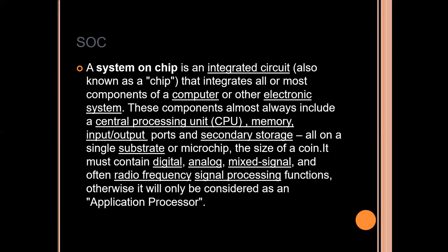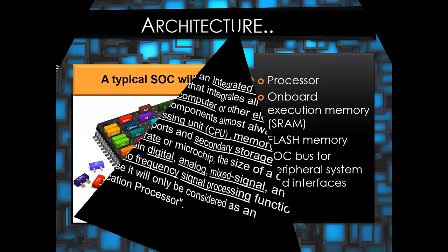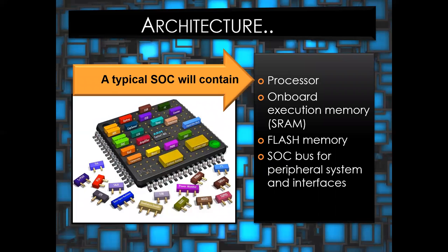Otherwise, it will also be considered as an application processor. Now let's see its architecture. A typical SoC will contain a processor, on-chip execution memory known as SRAM, flash memory, an SoC bus for peripheral systems, and the interfaces.